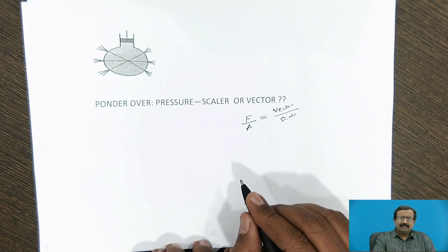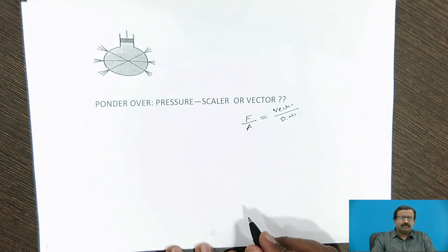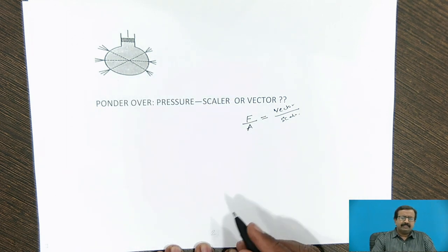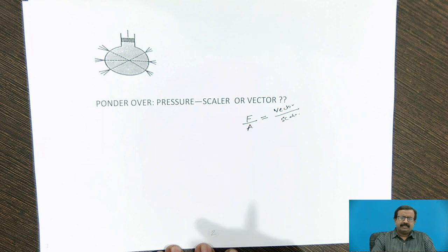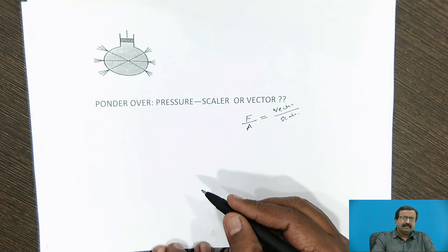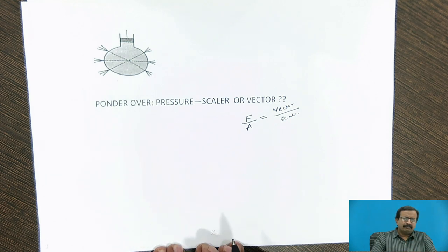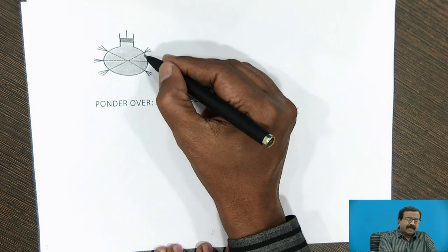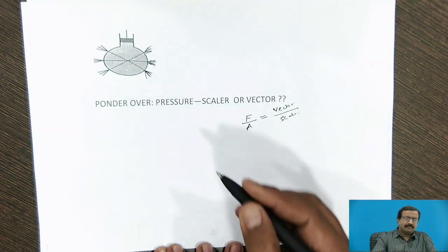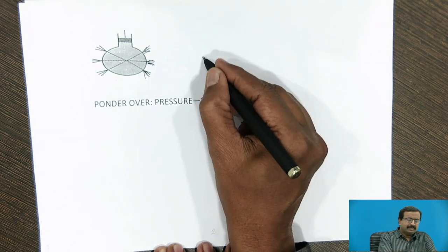Now before that, whatever the sketch I have drawn over here, you just have a thinking over it. This is a balloon in which liquid is filled, and there are small holes here. Now suppose I put the piston down, what will happen? The water will ooze out from all the holes. Look at the directions in which the water is coming out. Is it normal to the surface or not? That is my question.